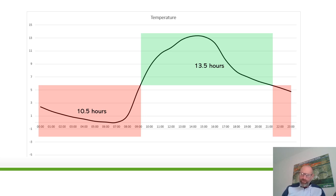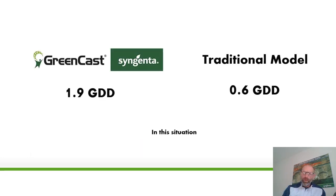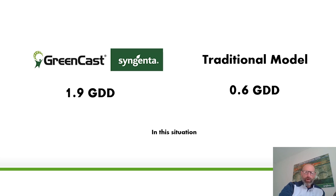It's worth explaining because if you look at traditional model work you may have done in the past, you may start to see a slight difference in the figures you record. Particularly if you're around the coast — we don't find this temperature sits as low and as long around coastal areas, so this model should work out much better for you. In this situation the Greencast model threw up 1.9 growth degree days, while the traditional model threw up 0.6 growth degree days. It doesn't make massive differences, but it is worth understanding how our system works.